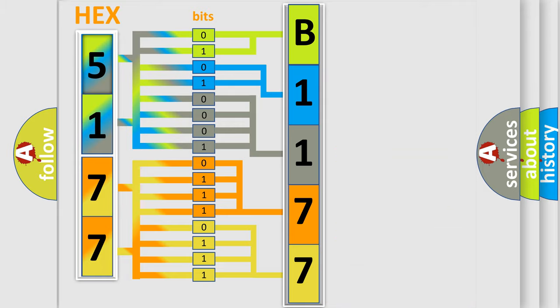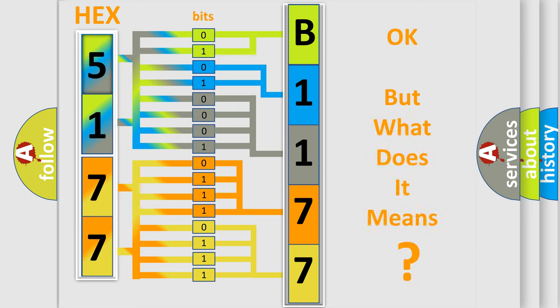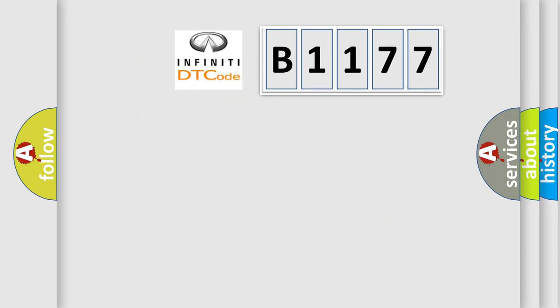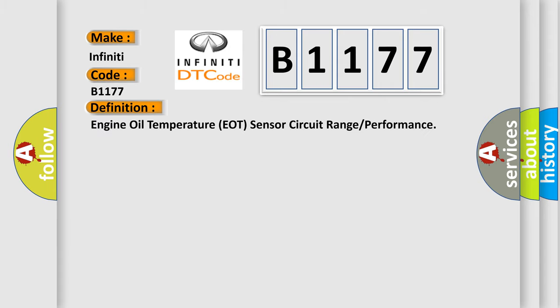We now know in what way the diagnostic tool translates the received information into a more comprehensible format. The number itself does not make sense to us if we cannot assign information about what it actually expresses. So, what does the diagnostic trouble code B1177 interpret specifically for Infiniti car manufacturers?